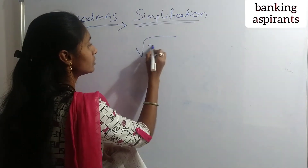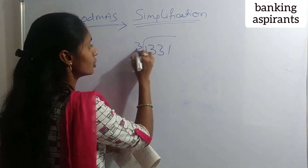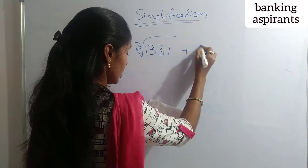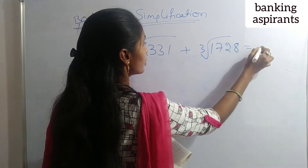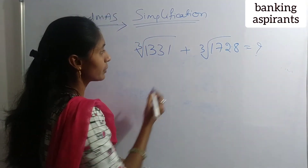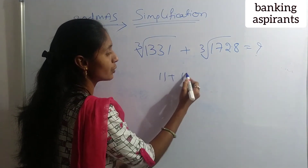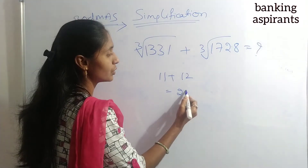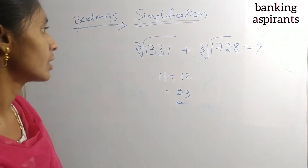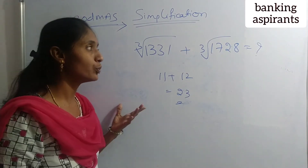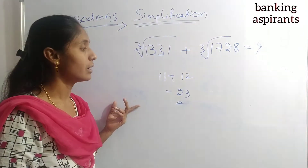Next question: cube root of 1331 plus cube root of 1728 equals how much? 1331 is 11 cubed and 1728 is 12 cubed. So the answer is 11 plus 12 equals 23. By remembering square and cube values up to 30, we can easily find answers.